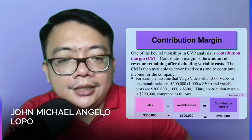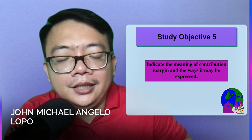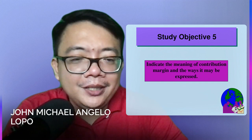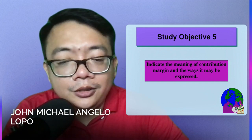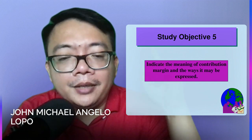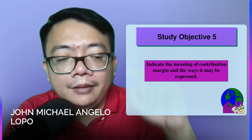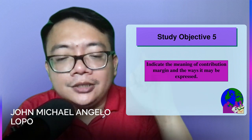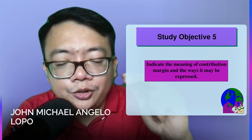Next, let's discuss the meaning of contribution margin. When you say about contribution margin, it can be expressed in terms of total: sales minus total variable cost equals the CM total. It can also be expressed in terms of per unit: selling price minus variable cost per unit gives you your contribution margin.